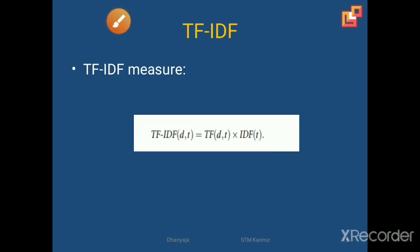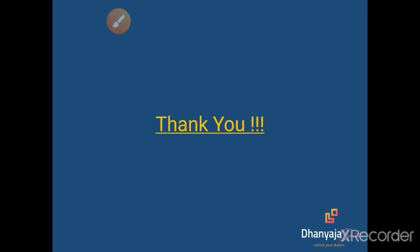Next is the TF-IDF measure. After finding the term frequency and inverse document frequency, we will find the TF-IDF measure. As a result, we have a vector representation which will give a high value for a given term if it occurs often in that particular document. The equation is: TF(D,T) × IDF(T). That is the equation for finding the TF-IDF. That is all about the concept of term frequency and inverse document frequency in text mining. Thank you.